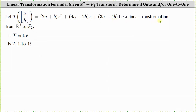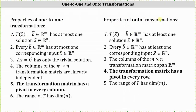Let the transformation T be a linear transformation from R2 to P2. Is T onto? Is T one-to-one? Looking at the properties of onto and one-to-one transformations, we focus on the property that if the transformation matrix has a pivot in every row, the transformation is onto; and if it has a pivot in every column, the transformation is one-to-one.